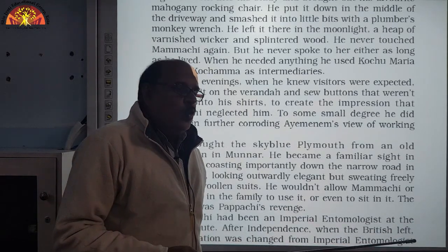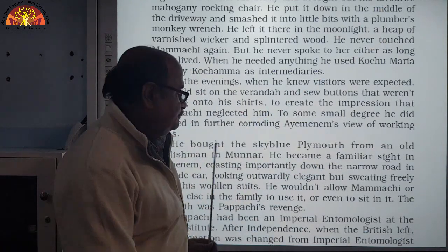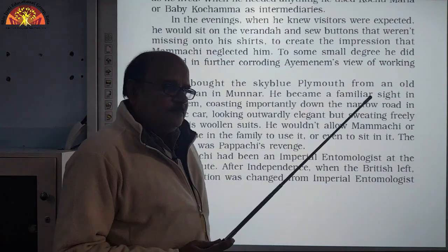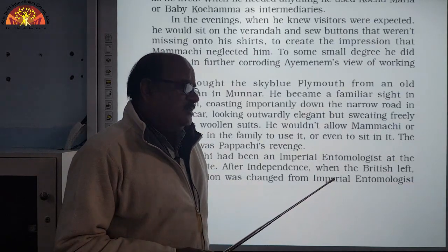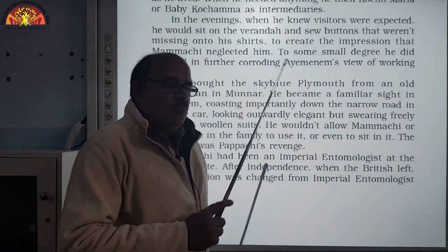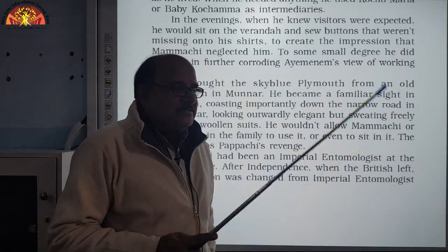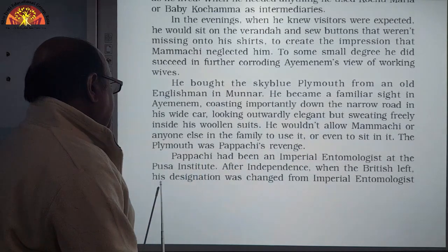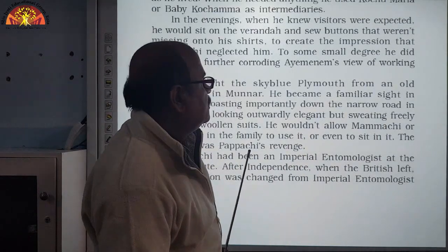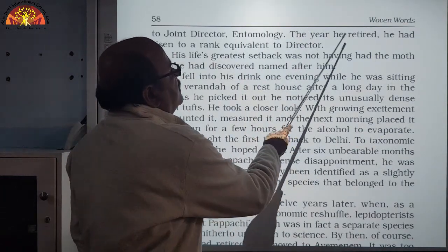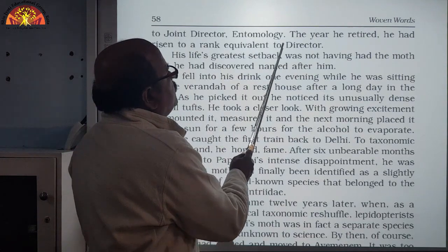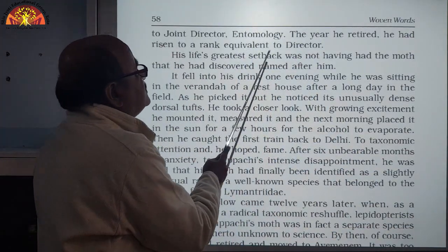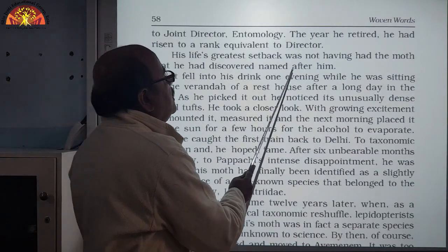The Plymouth was Papaji's revenge on his family. Papaji had been an Imperial Entomologist — entomologists are people who study the science of insects, moths, and mites. At the Pusa Institute, after Indian independence, his designation was changed from Imperial Entomologist. The year he retired, he had risen to the rank of full-fledged Director. His life's greatest setback was not having had the moth he discovered named after him.